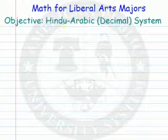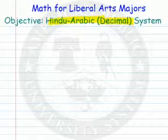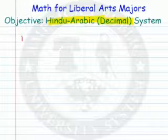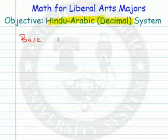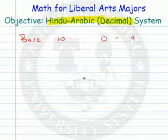In this video, we're going to look at the Hindu-Arabic, or the decimal system, or the one that we use conventionally in our country. The system is based on 10 — base 10. That means we have 10 different symbols, and those symbols you know are 0 through 9.